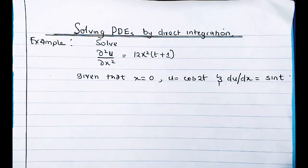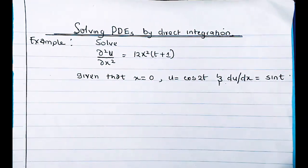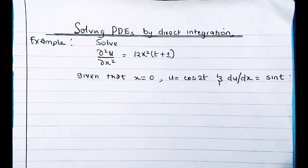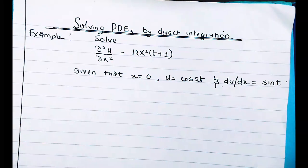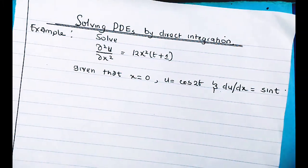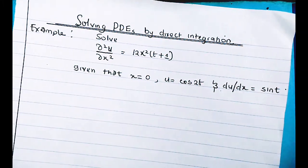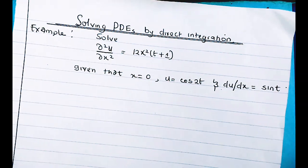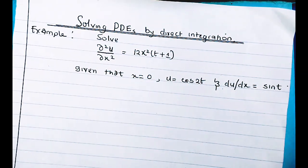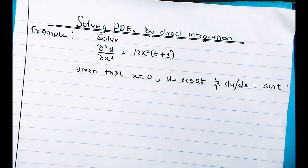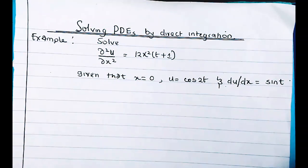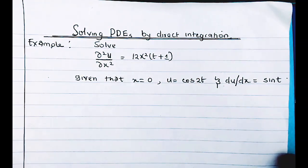Welcome back. We are going to look at how to solve a partial differential equation by the method of direct integration. This is one of the simplest methods — just like with ODEs, we can also solve PDEs by direct integration. This basically means integrating the partial differential equation directly and applying the given conditions.